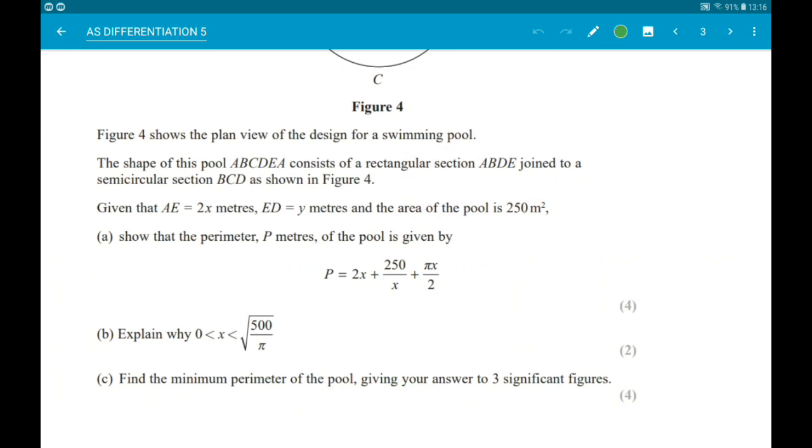Ok then, part b wants us to explain why x must be greater than 0 but less than 500 over π. So, x is a length, so x must be greater than 0 because x is a length.